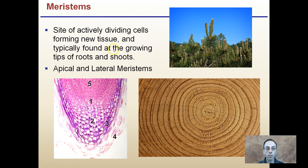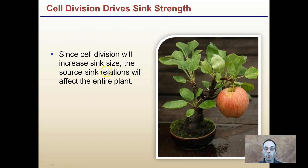Meristems are the site of actively dividing cells, forming new tissue, and are typically found in the growing tips of roots and shoots — there are apical and lateral meristems. These are examples of meristems that require a lot of energy and are typically sink areas. Cell division drives sink strength and will increase the sink size. The source-sink relationship affects the entire plant, and a large fruit will have a lot of sink strength, driving many of the processes that the plant goes through.